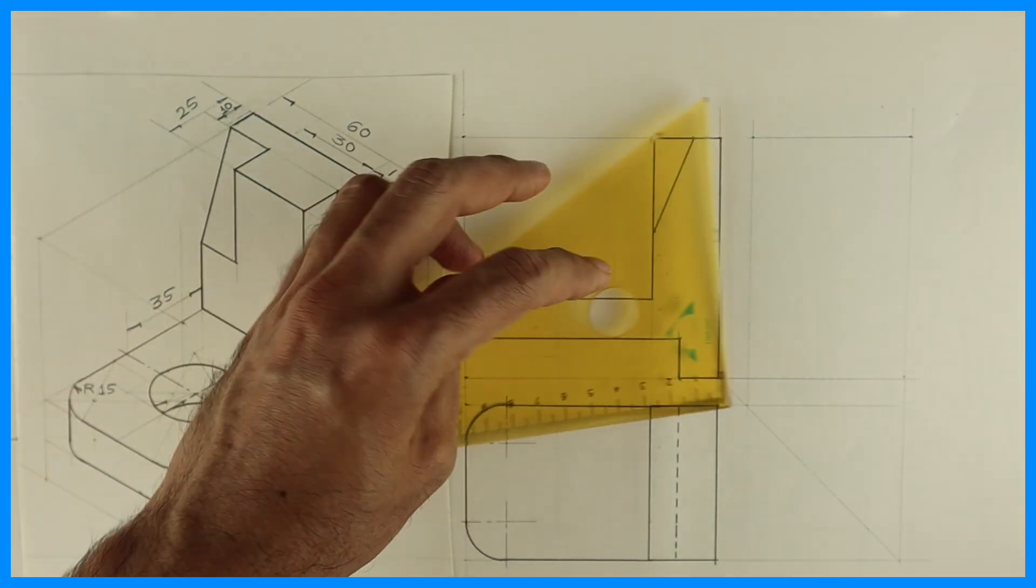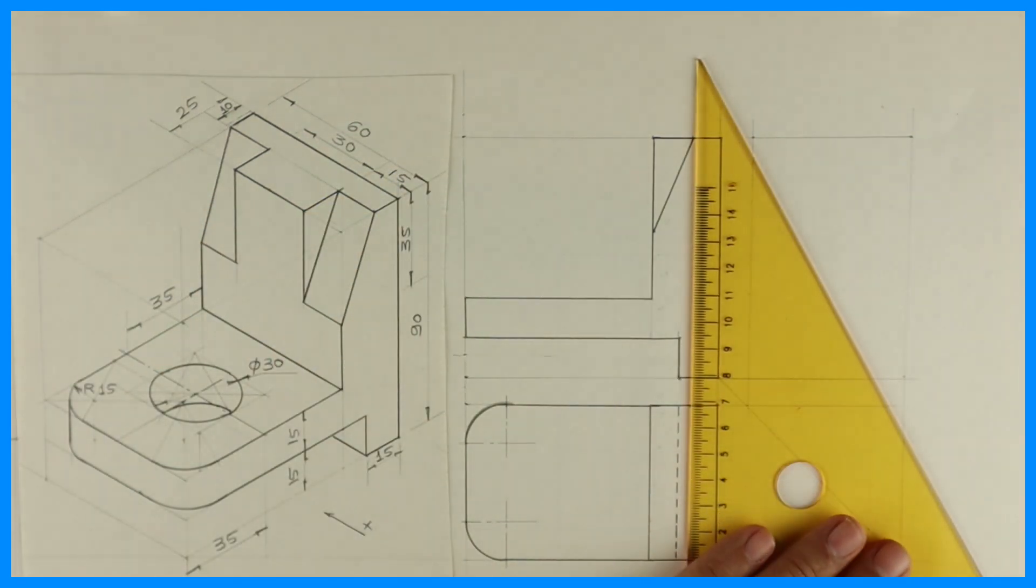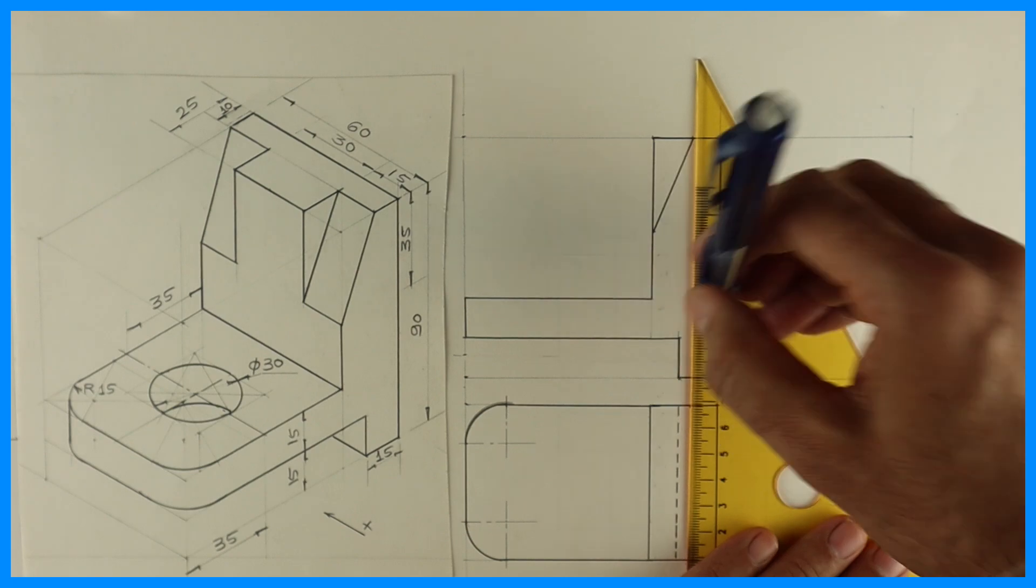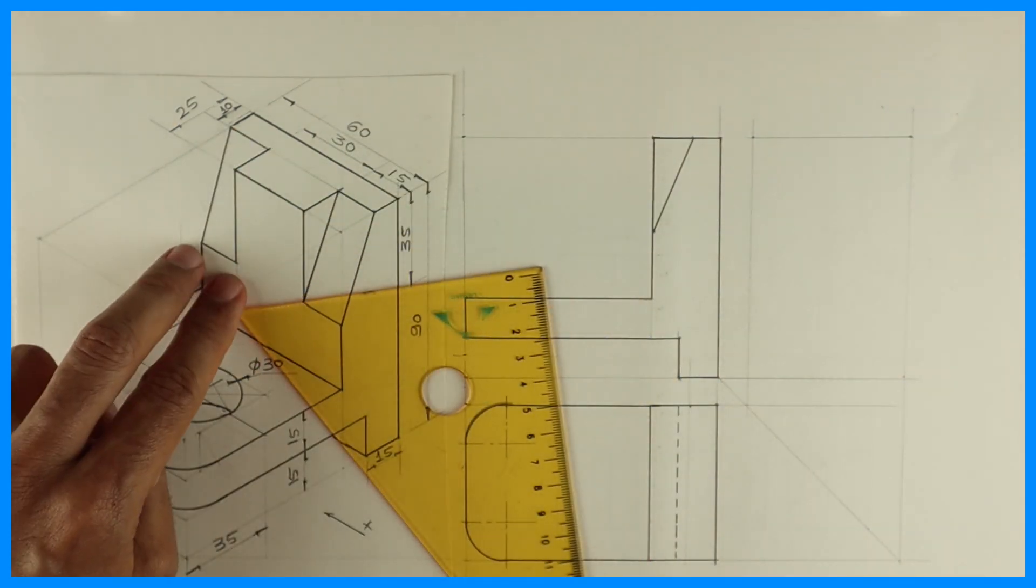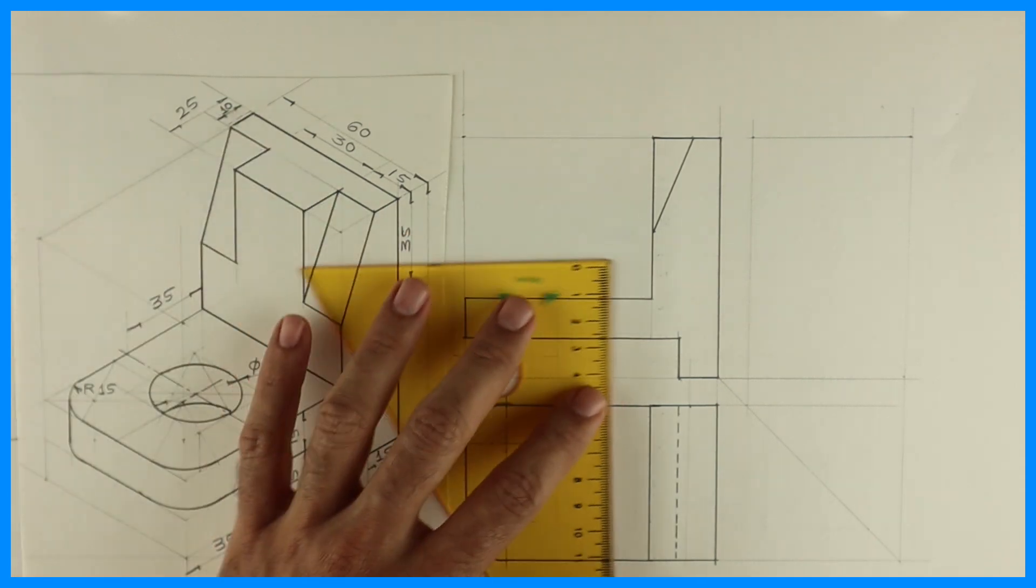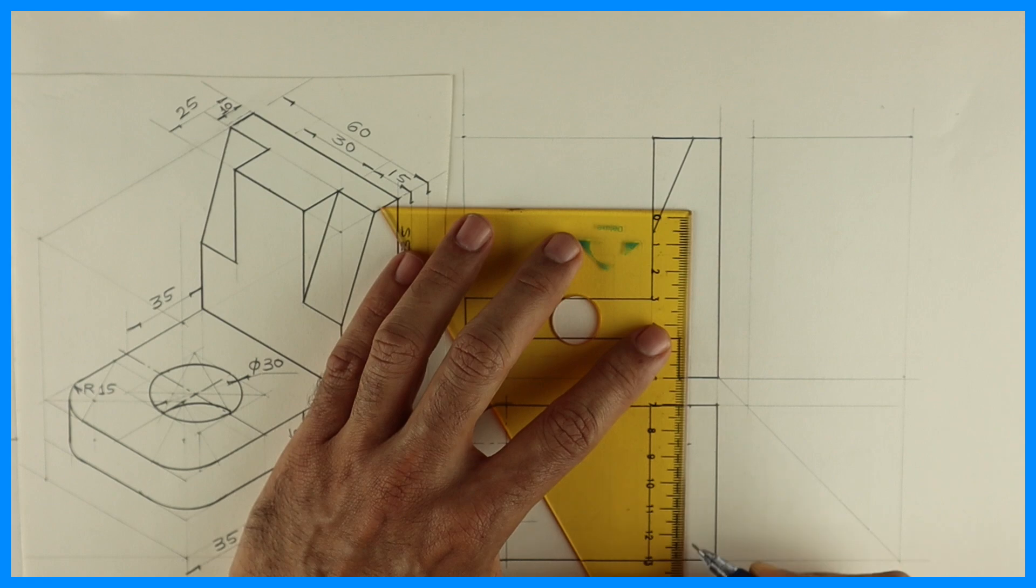Now we'll draw this T part. How much is this? 10mm. Then it goes inside by how much? 15, 15 on both the sides. So we'll take 15, 15.